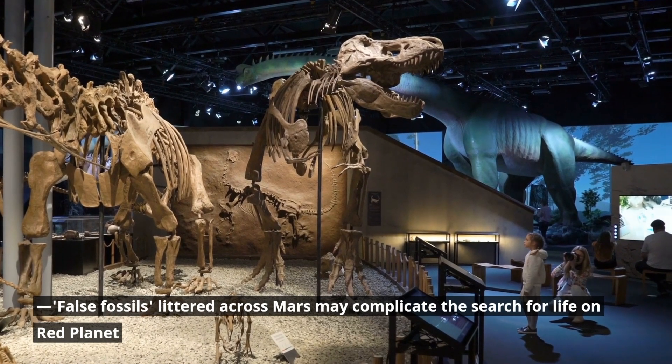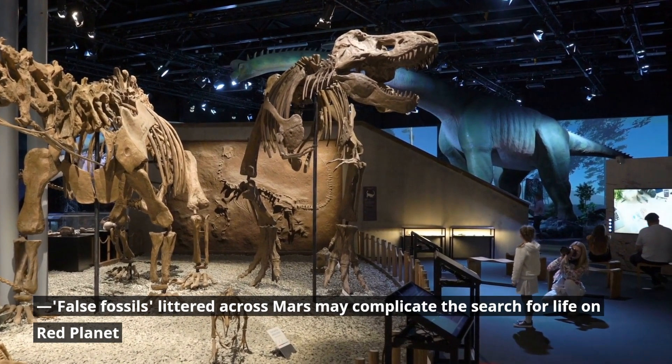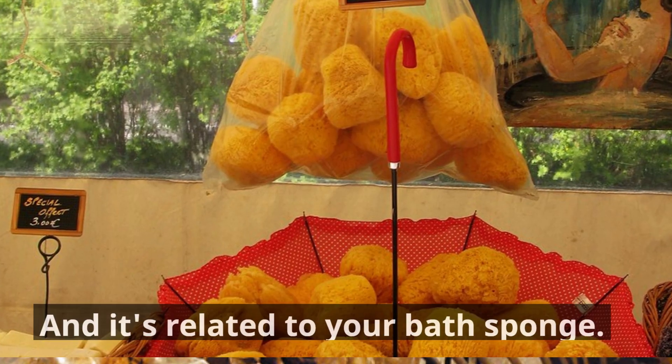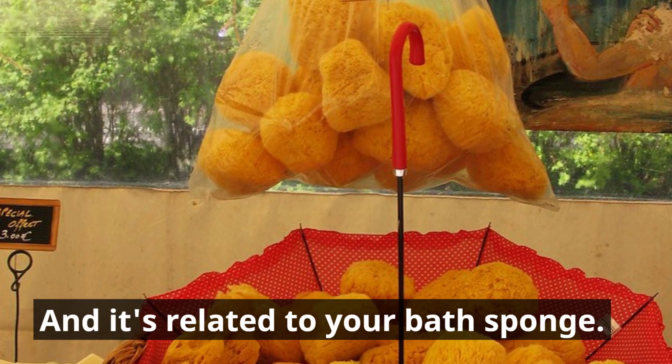False fossils littered across Mars may complicate the search for life on Red Planet. Oldest animal life on Earth possibly discovered, and it's related to your bath sponge.